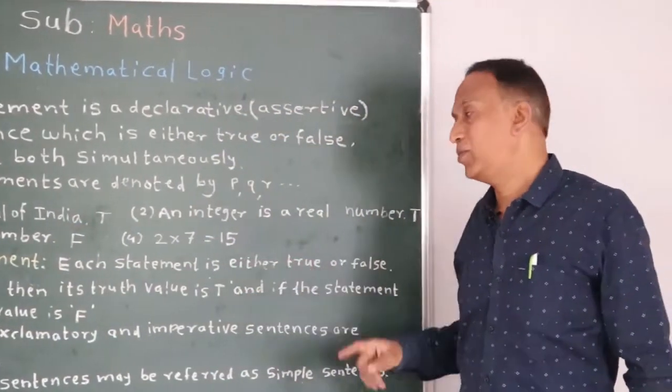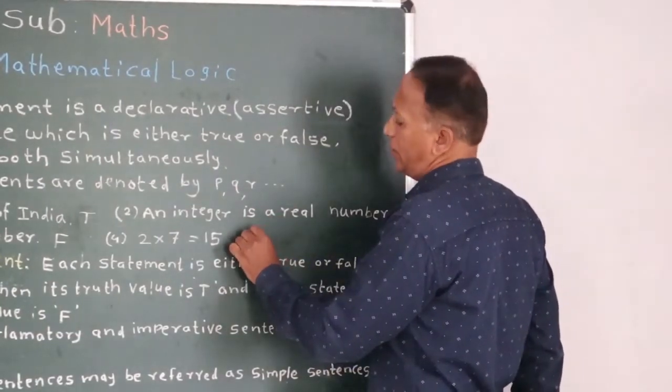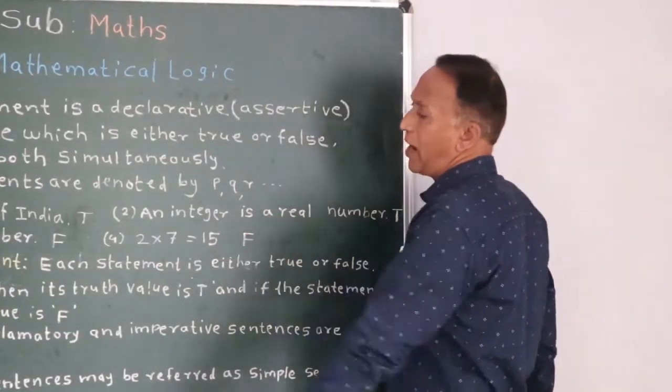And 2 multiplied by 7 is equal to 15 also, false statement. That is why its truth value is denoted by F.